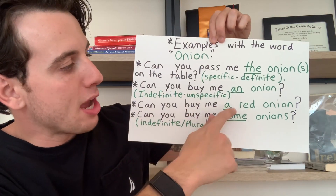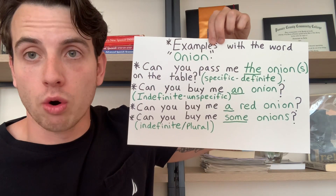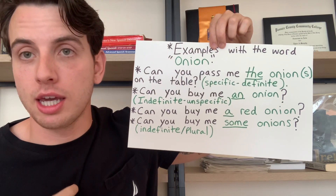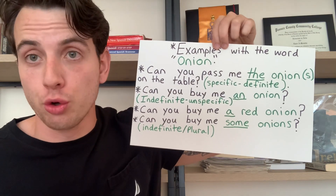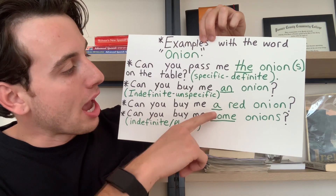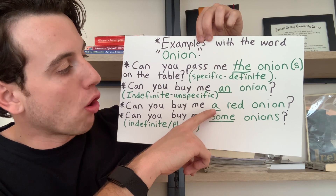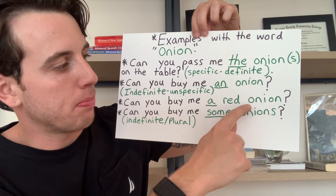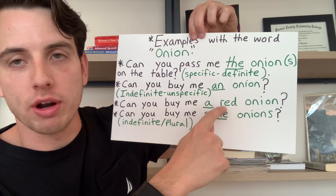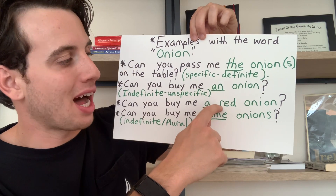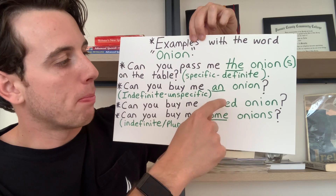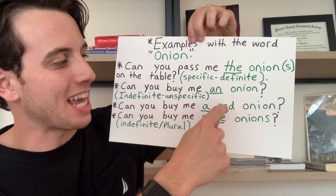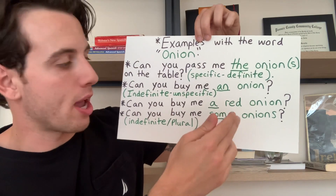Can you buy me a red onion? That is indefinite or in general — there are many different red onions and I don't know specifically which one you're going to choose, just a red onion. As you can see, we're using 'a' instead of 'an' because although 'onion' begins with a vowel, there's an adjective before it, 'red,' which begins with a consonant. So if there's an adjective before the noun, we base the article off the adjective — the following word: a red onion.